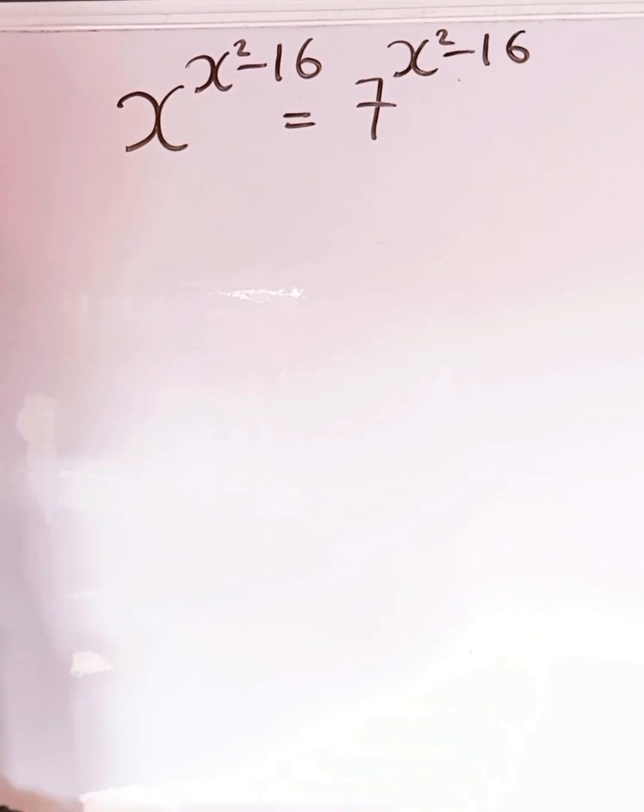x to the power of x squared minus 16, 7 to the power of x squared minus 16, it means that these two bases must also be the same because we can have 3 to the power of 2 to be equal to 5 to the power of 2. If they have the same power, they must have the same base.